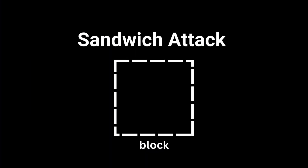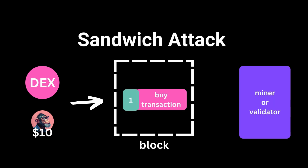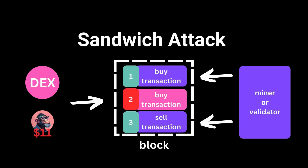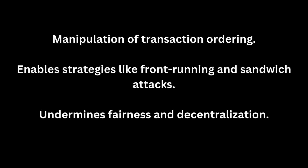A sandwich attack is a sneakier version. The attacker places one transaction before yours and another right after. For instance, they see you're about to buy a token, so they buy it first to increase the price, then let your transaction go through at a higher price, and finally sell the token at a profit. You'll lose money because you pay more than expected.